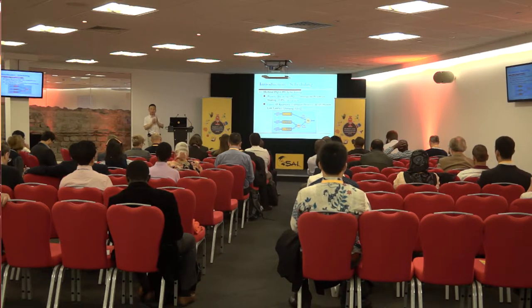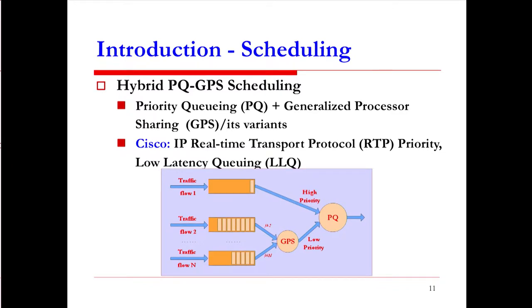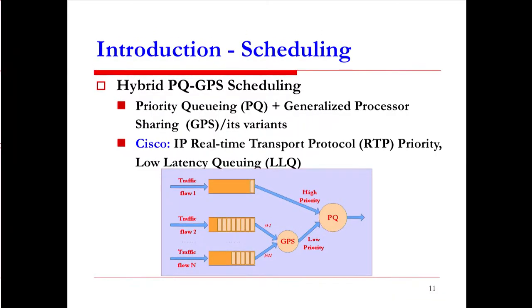To combine the advantages of priority queuing and GPS, the hybrid PQ-GPS system has been proposed. As shown in this figure, traffic flow 1 — for example, real-time voice traffic — is assigned the highest priority. Other traffic flows such as real-time video, non-real-time video, download video, and background traffic are scheduled by GPS with low priority. By assigning different weights to flows 2 through n, this hybrid scheduling mechanism provides strict high priority to delay-sensitive applications while maintaining fairness and differentiated quality of service for other traffic flows.